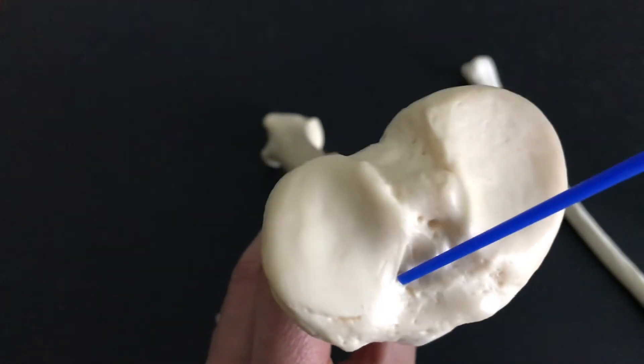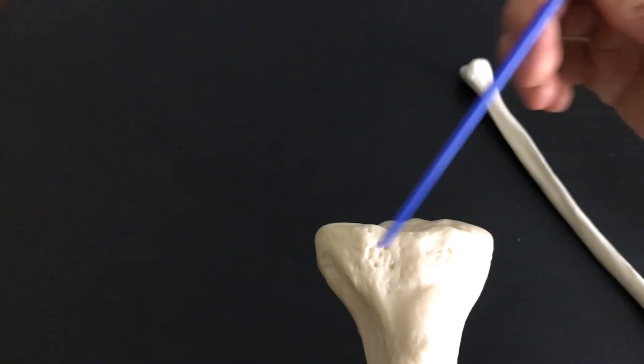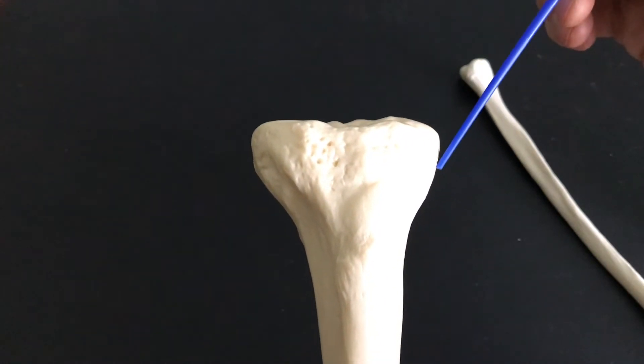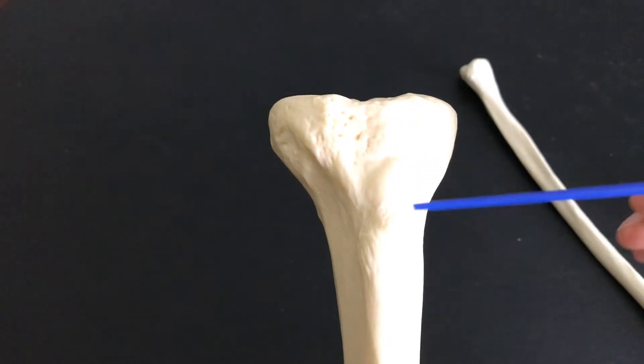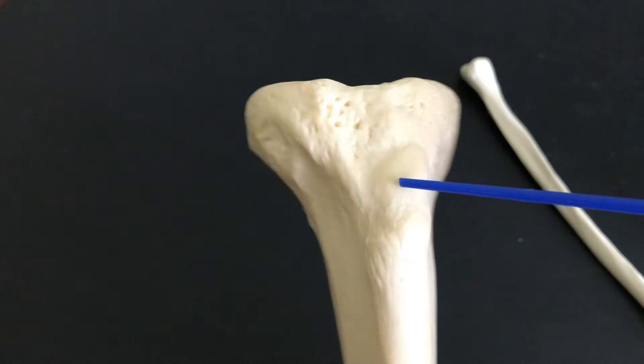This is the lateral condyle of the tibia, this is the medial condyle of the tibia. And this bump right here, if I can get a little closer, this bump right here, that's your tibial tuberosity.